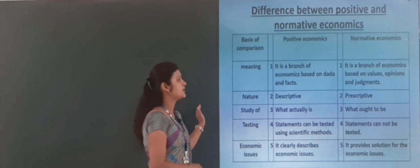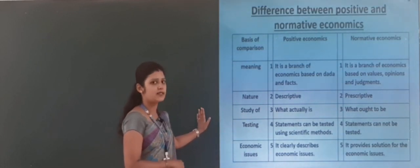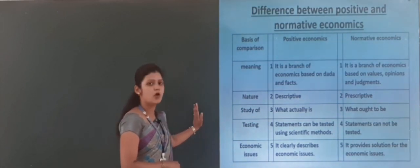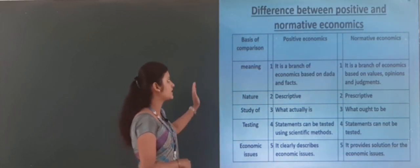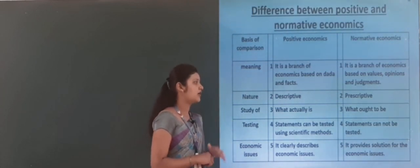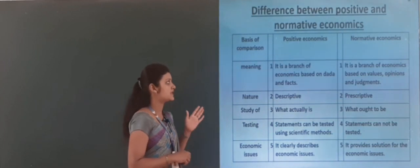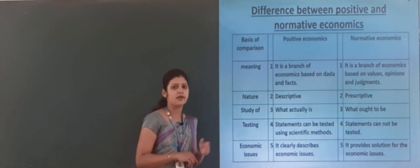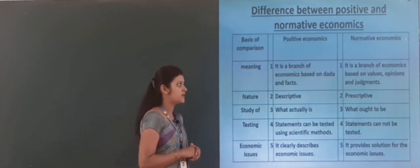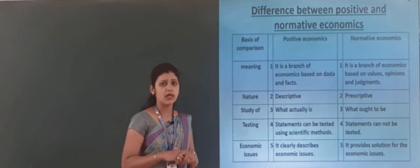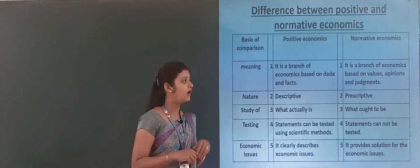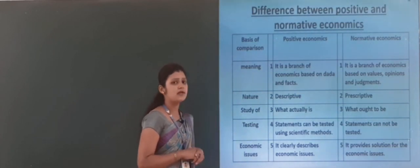The first column shows the basis of comparison, the second column is positive economics, and the third column is normative economics. The first difference: positive economics is a branch of economics based on data and facts, while normative economics is a branch of economics based on values, opinions, and judgments.